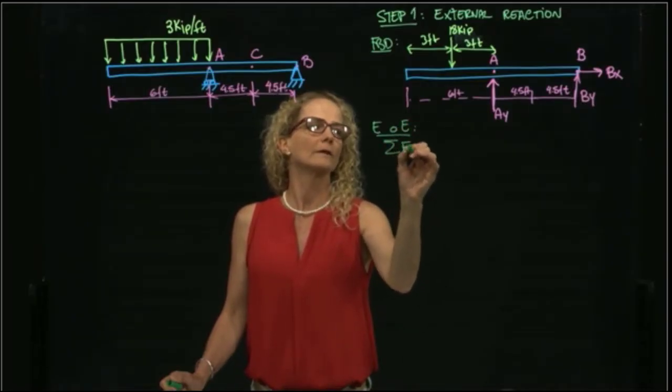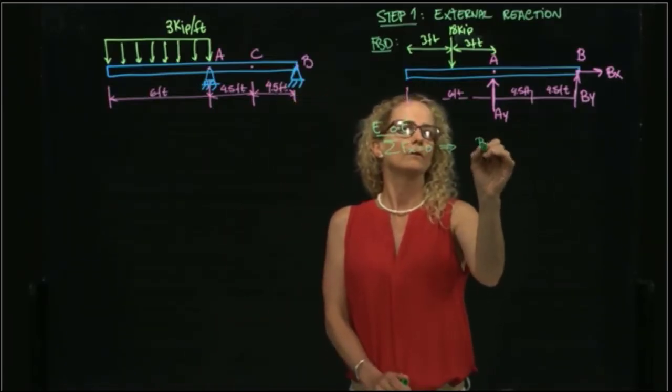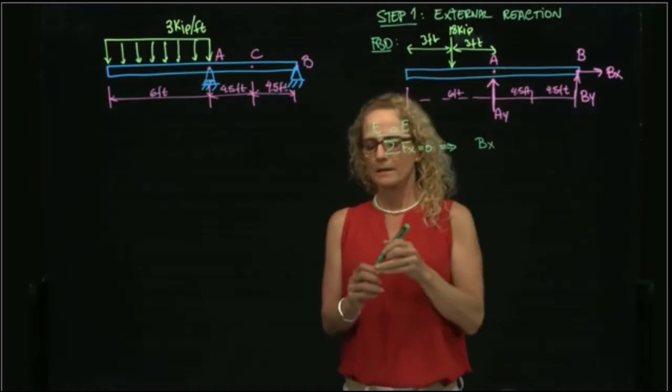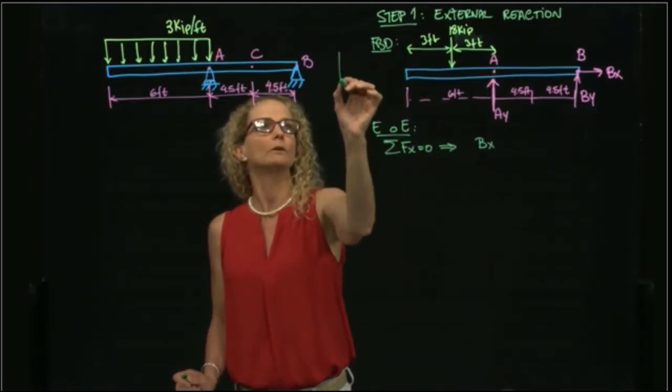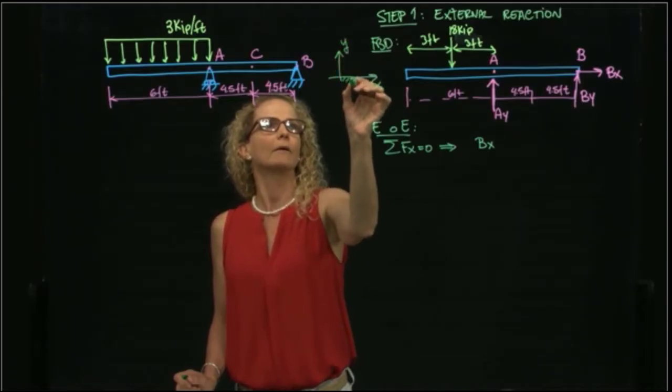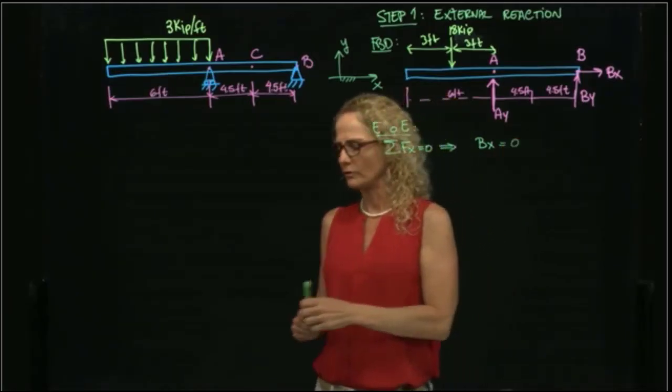And for that, I add forces in X, which is equal to 0. Therefore, as you see, the only force that is in the system in the X direction, remember that we are using X, Y, and Z as our inertia coordinate system. So BX is equal to 0.